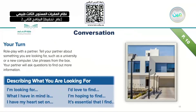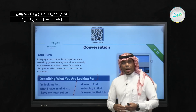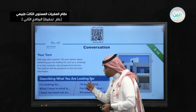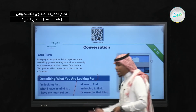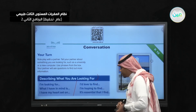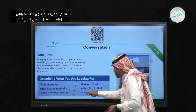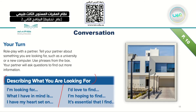We will also look at how to describe what you are looking for using these six phrases: 'I'm looking for...'; 'What I have in mind is...' — for example, a small apartment because I am a new student; 'I have my heart set on...'; 'I'd love to find...'; 'I am hoping to find...'; and 'It's essential — meaning necessary — that I find...'